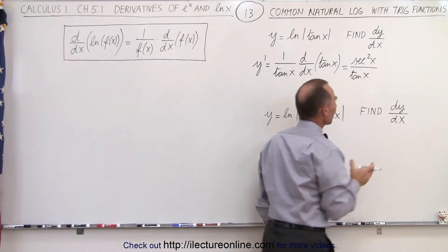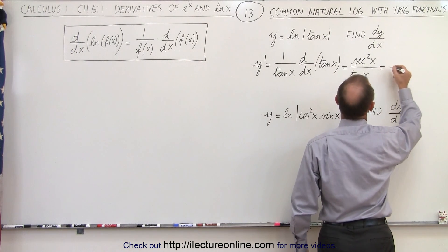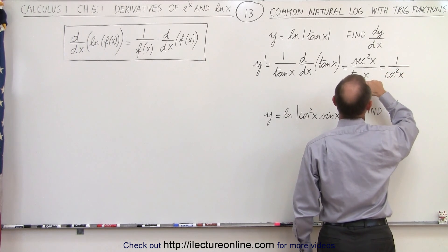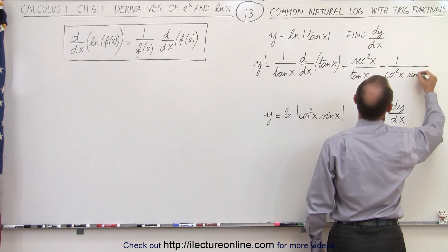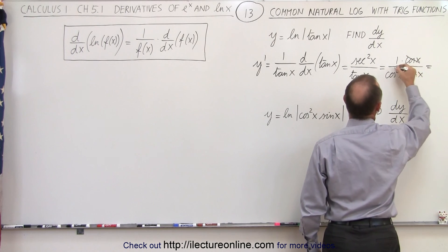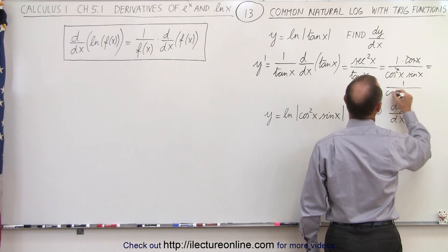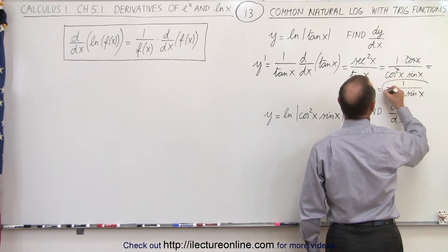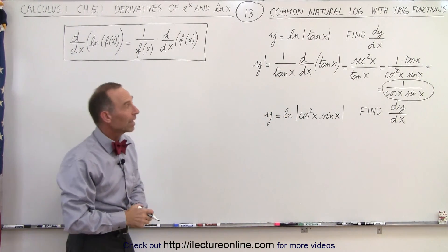This can be simplified by writing out what the secant and the tangent are. The secant is 1 over the cosine, so this becomes 1 over cosine squared of x. And the tangent is sine over cosine, which means we get a sine and a cosine in the numerator. That cosine cancels out one of the cosines, so we end up with 1 over cosine of x times sine of x. That is the derivative of the natural log of the tangent of x.